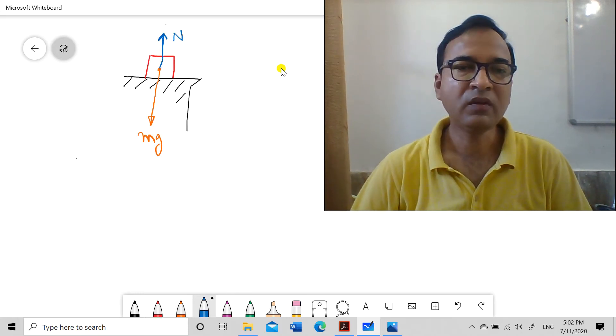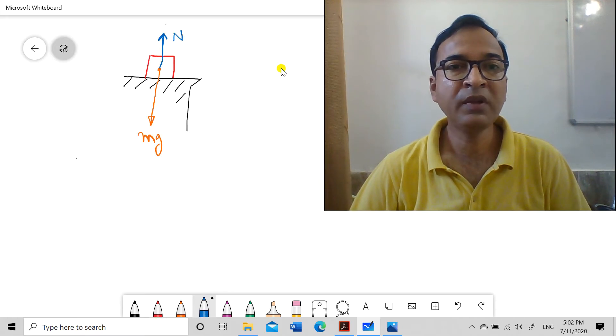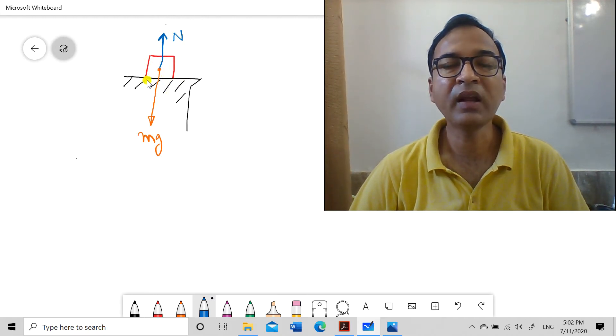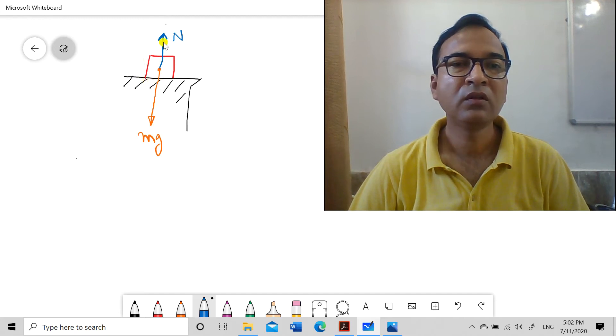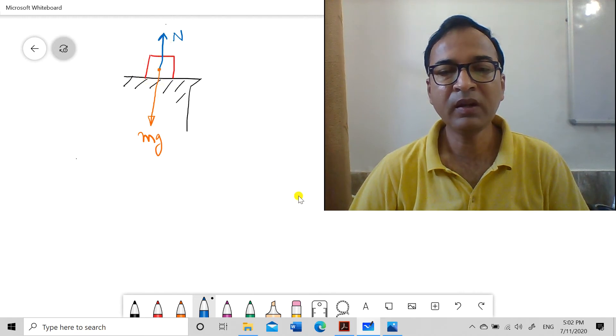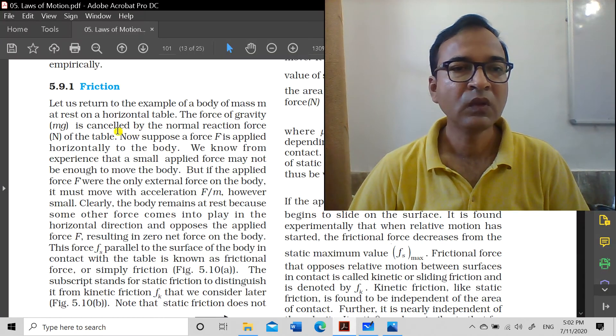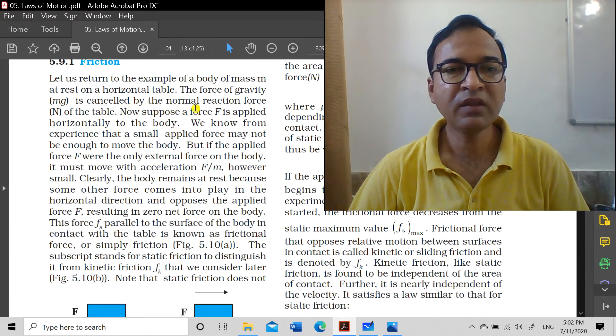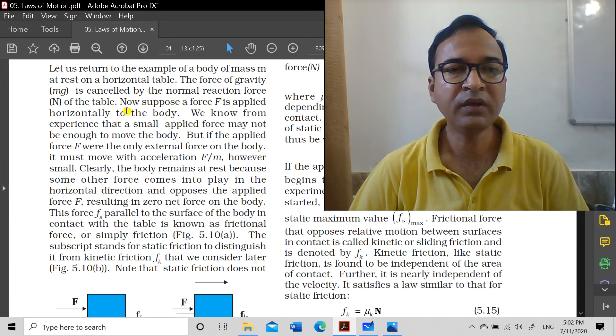These two forces balance each other. This is not an action-reaction pair here, because the action is on the table and its reaction is the normal reaction. We are talking about one body, whereas action-reaction pairs act on different bodies. Capital N and mg balance each other - these are forces acting on this body.